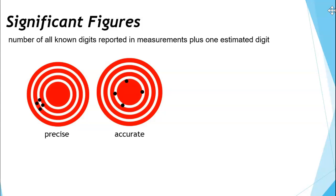Let's review the difference between precision and accuracy. We have some pictures to help us here. Precision is how close measurements are to each other. In this picture, we have several shots taken at a dartboard that all wound up in generally the same place. Even though they are not in the middle of the target, they are still all close together. So those shots at the target are very precise, even though they are not actually very close to where we wanted them to be, which is in the middle.